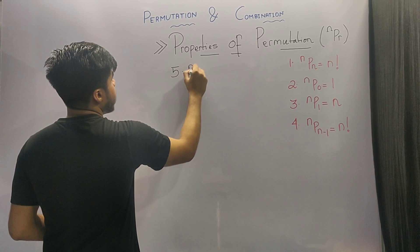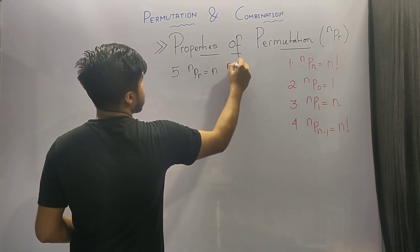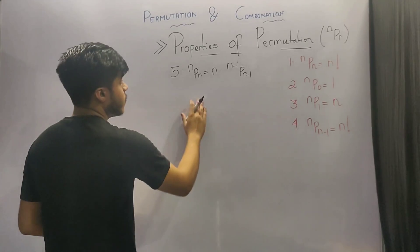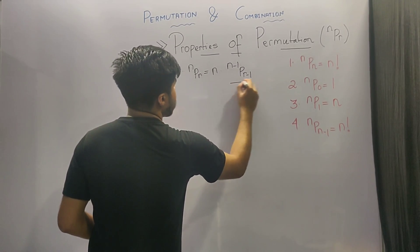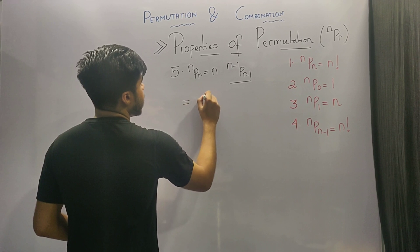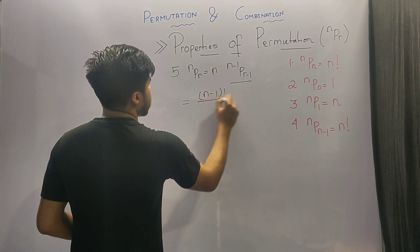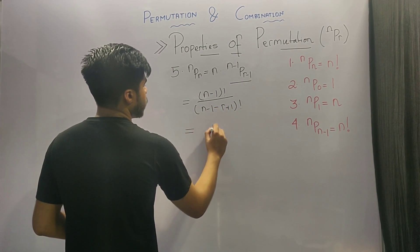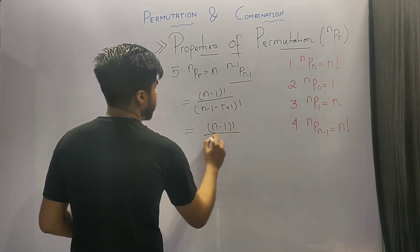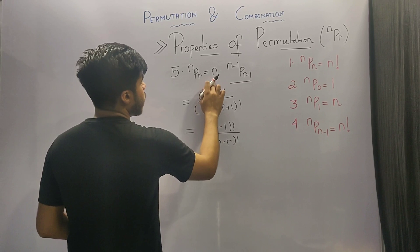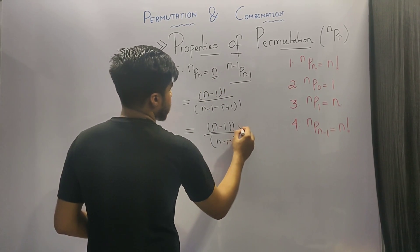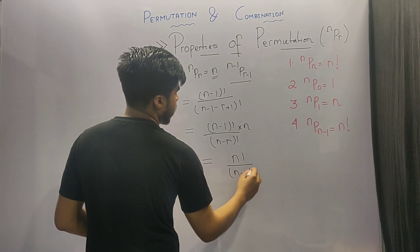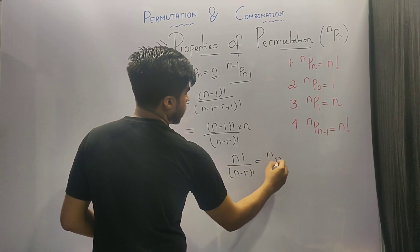The fifth property says that nPr is equivalent to n times (n minus 1)P(r minus 1). We can prove this by putting it in the formula of nPr. We get n minus 1 factorial upon n minus 1 minus r plus 1 factorial, which is equal to n minus 1 factorial upon n minus r factorial. Multiplying by n, we get n factorial upon n minus r factorial, which is equivalent to nPr.